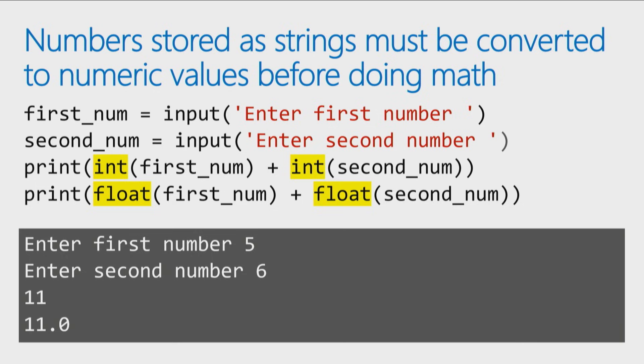The int function will convert it into an integer, a whole number, one, two, three, four. Float will convert it into a number, a floating number or something that might have decimal places, 1.0, 1.5, 2.6, anything like that would be a float.